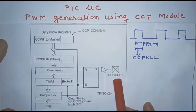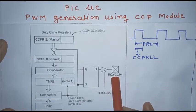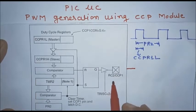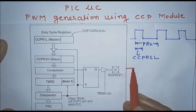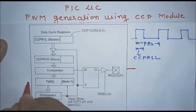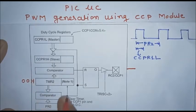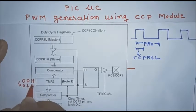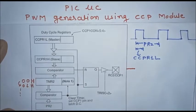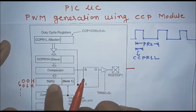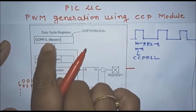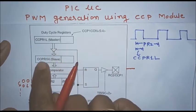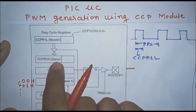The PWM signal will be generated at the RC2 pin of the PIC microcontroller. Initially, the RC2 terminal will be at logic 1, and TMR2 is initialized with 00H. After each clock cycle, when Timer 2 is turned on, the contents of TMR2 are incremented by 1. The first comparator compares TMR2 contents with CCPR1L, which is copied into CCPR1H by the microcontroller.